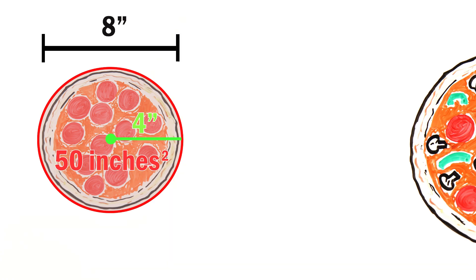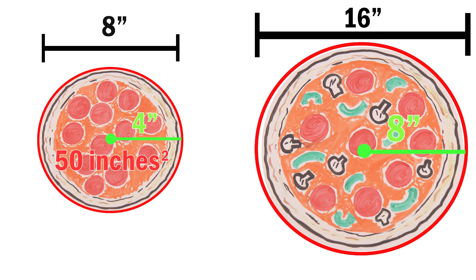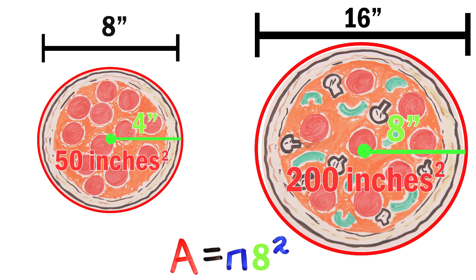But if we do the same thing for a 16 inch pizza, which has a diameter that is 2 times bigger, we find that even though your intuition may say it's twice as big, it actually has an area of over 200 square inches, which is 4 times more pizza.